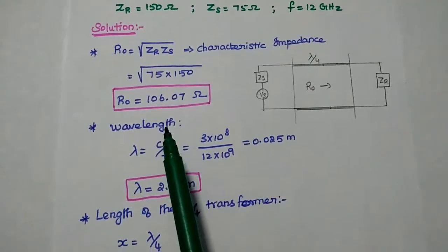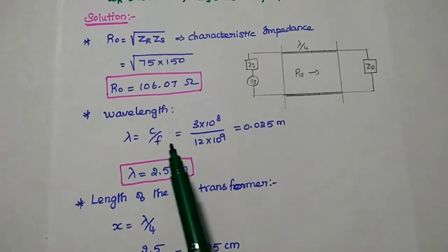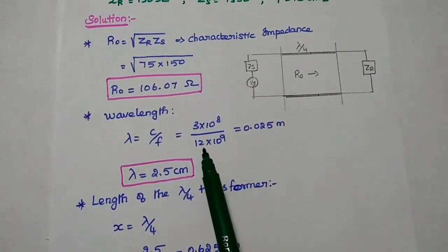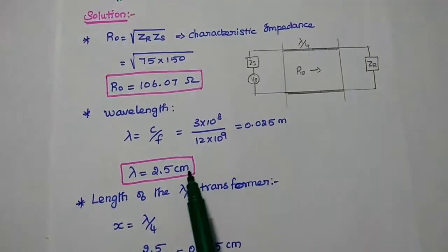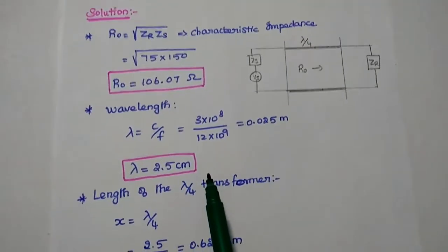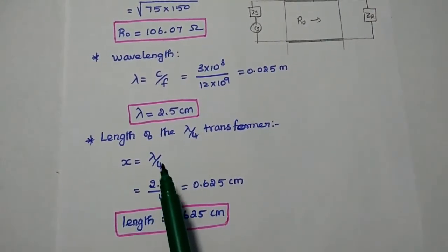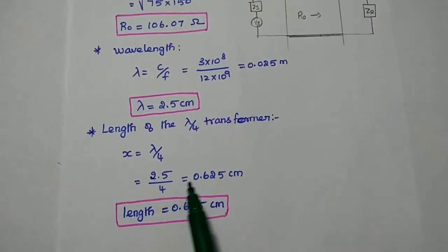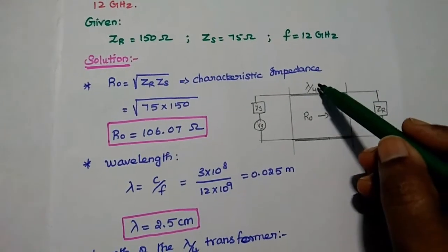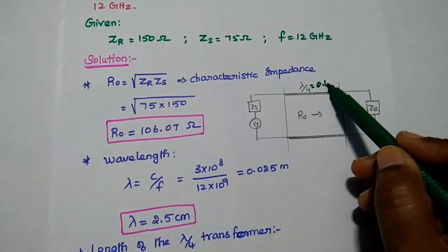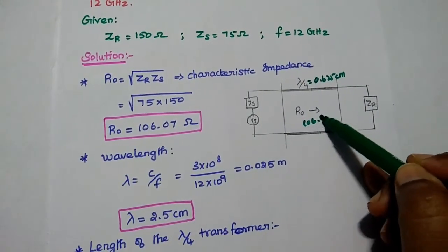Next we have to find out the quarter wavelength. Wavelength is equal to C by F. Substituting the values: 3 into 10 to the power 8 divided by 12 into 10 to the power 9, we get the answer as 0.025 meter, which can be written as 2.5 centimeter. From this we get the value of lambda by 4: X is equal to lambda by 4, so 2.5 divided by 4 is equal to 0.625 centimeter. So lambda by 4 is equal to 0.625 centimeter, and the R0 value is 106.07 ohm.